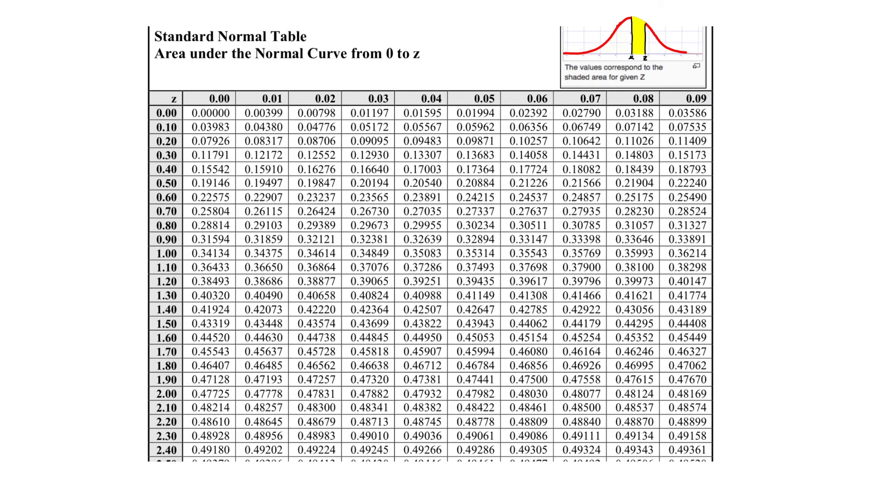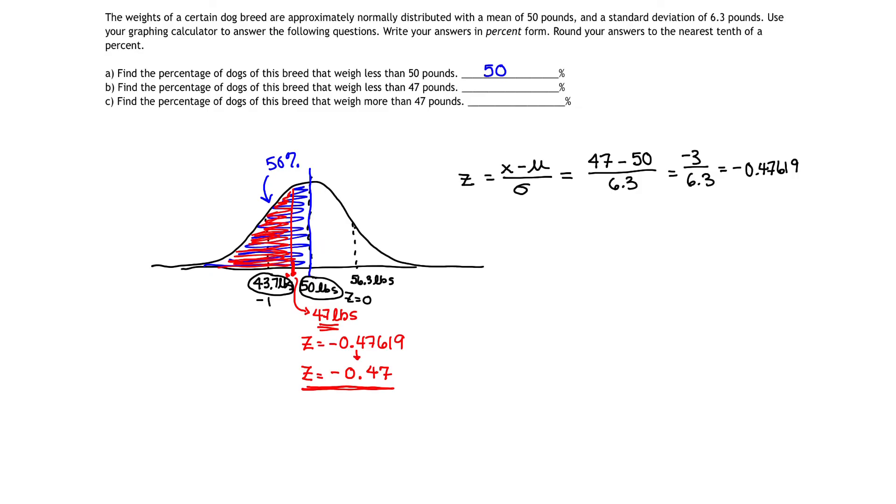So on my Z table, I'm looking for a Z value of negative 0.47. And where do I see Z being negative? Well, we don't, but we remember that the area to the right and to the left of the mean is the same. So I'm going to look for 0.47. And when I get that column matched with that row, it's giving me the Z score right here of 0.18082. 0.18082. I'm going to write that number down, 0.18082 was my number.